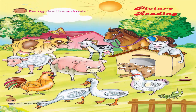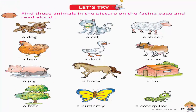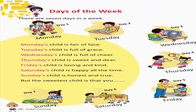Picture reading — Recognize the animals. Let's try. Find these animals in the picture on the facing page and read aloud: A dog, A cat, A sheep, A hen, A duck, A cow, A pig, A horse, A hut, A tree, A butterfly, A caterpillar, A mother.